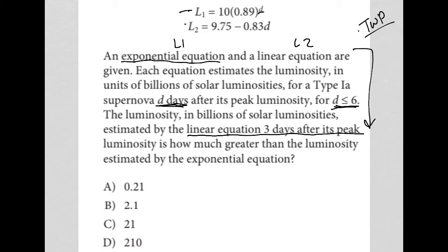The linear equation is L2. So L2 = 9.75 - 0.83d. Because it's three days after its peak, that means d is 3. So I'm going to replace that d with 3.